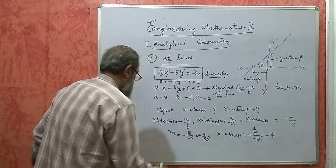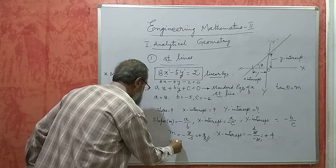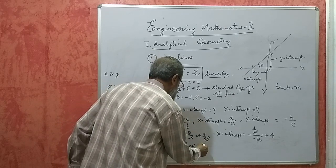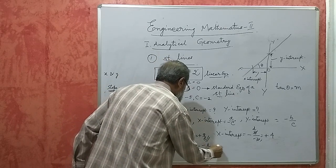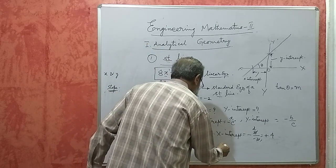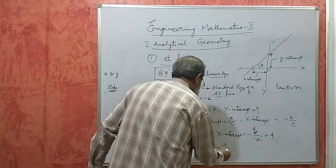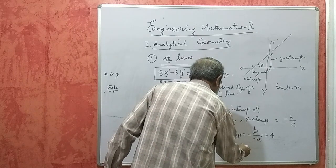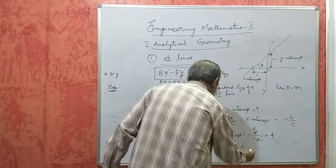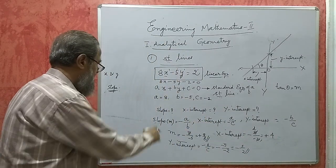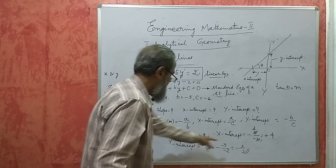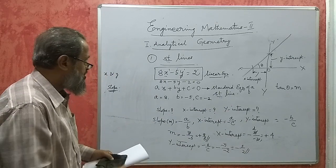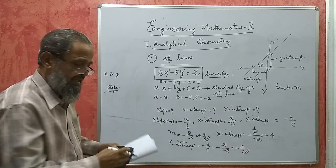For y-intercept: minus b divided by c equals minus of minus 5 divided by minus 2, which gives minus 5 by 2. If it does not simplify, keep it as a ratio; if it cancels, cancel it. Here it does not cancel, so y-intercept equals minus 5 by 2. This is the type of problem that can be asked.